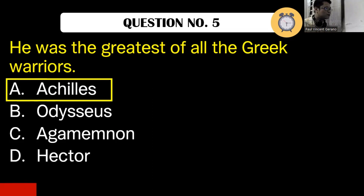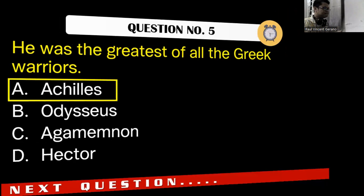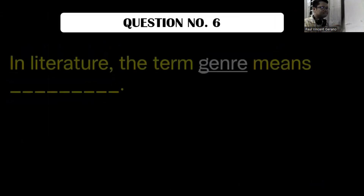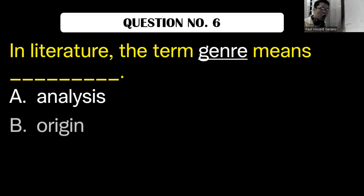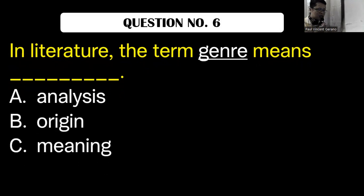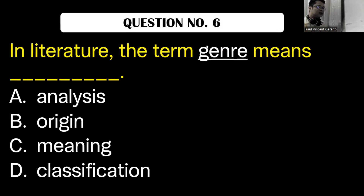Now let's go to question number six. In literature, the term genre means: A, analysis. B, origin. C, meaning. D, classification. What is the correct answer? Please write your answer in the chat box.